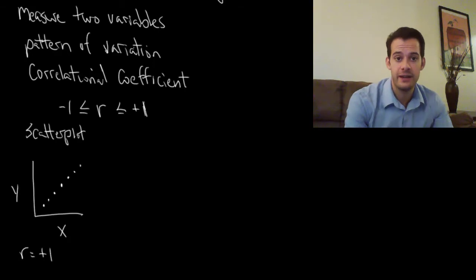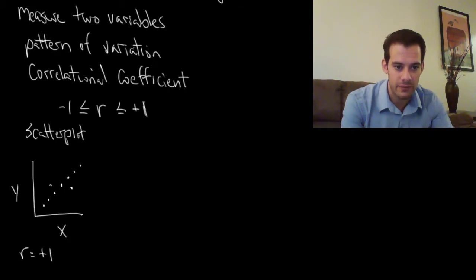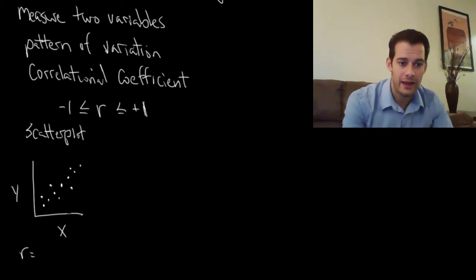Because it's perfect, it's as positive as we can get here, it's very predictable. Now in real life data isn't often going to look this way. Instead the data is going to get a little bit spread out. We're going to have some exceptions. So we're not going to be at positive 1 anymore. Let's say we get something a little bit more like this. If I know the x value I can predict the y value but not perfectly. I can still see it's a positive correlation. I can still see there's definitely a relationship between these two things but it's not a perfect relationship. I can't predict perfectly. So in this case we might have something like r equals positive 0.8.